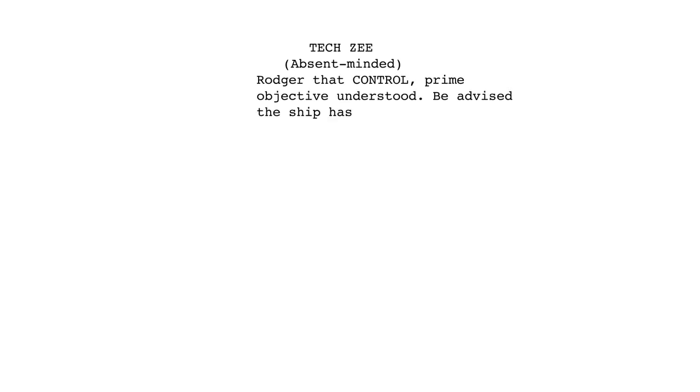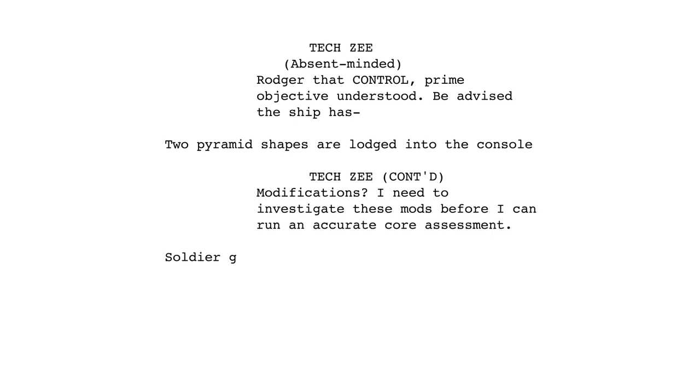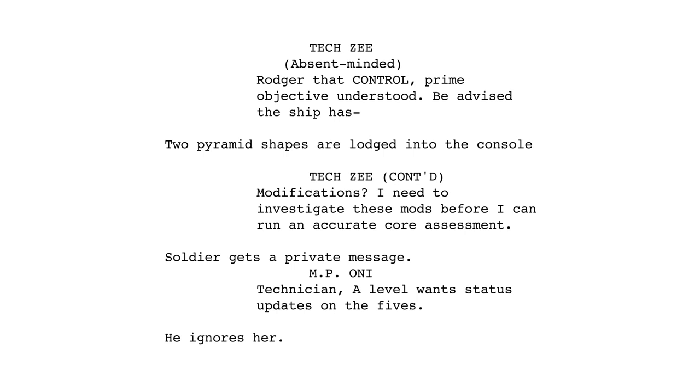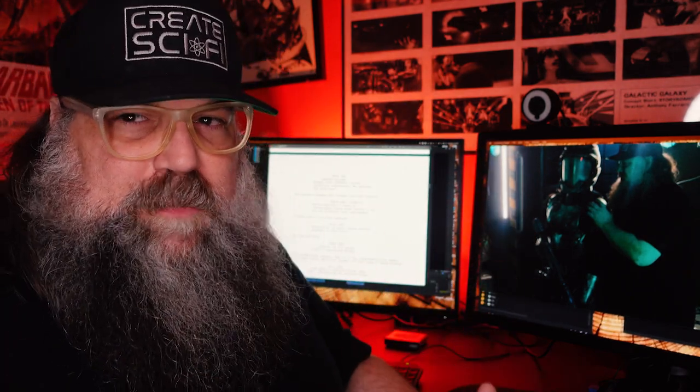Tech Z absent-minded: "Roger that, Control. Prime objective understood. Be advised, the ship has two pyramid shapes lodged into the console." "Modifications?" "I need to investigate these mods before I can run an accurate core assessment." Then the soldier gets a private message. "Technician, A-Level wants status updates on the fives." He ignores her. When you're writing for yourself, you read it out loud. You're always going to be rewriting. This version is probably like the 30th version, and probably after 20 versions I read it with people and did rewrites. It's part of the process.